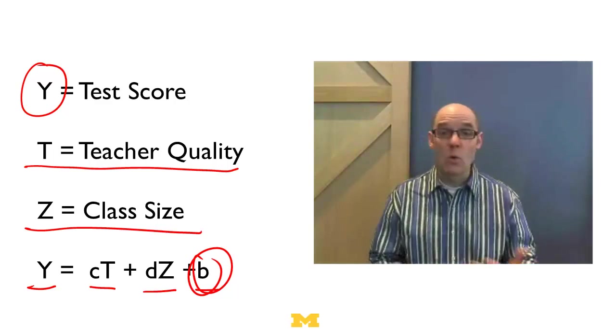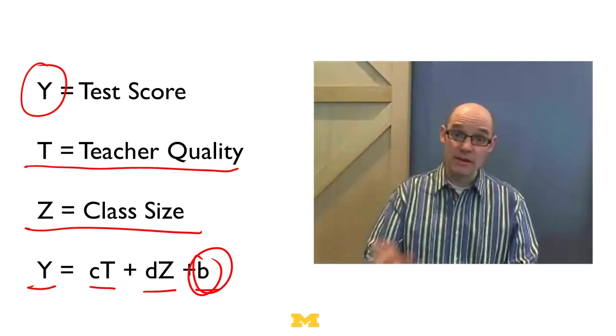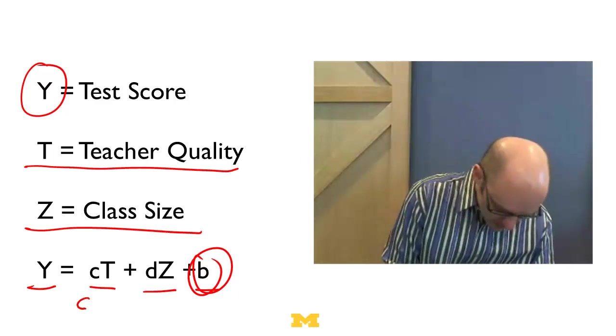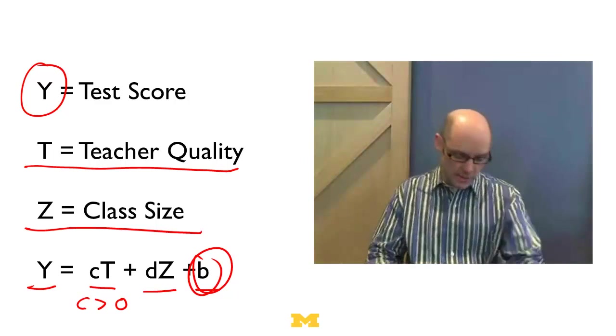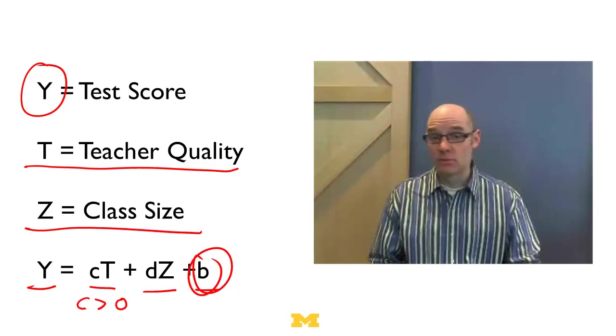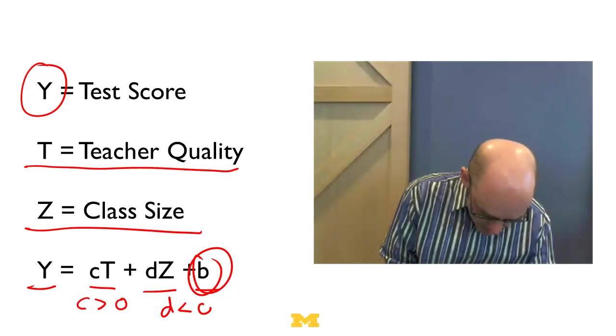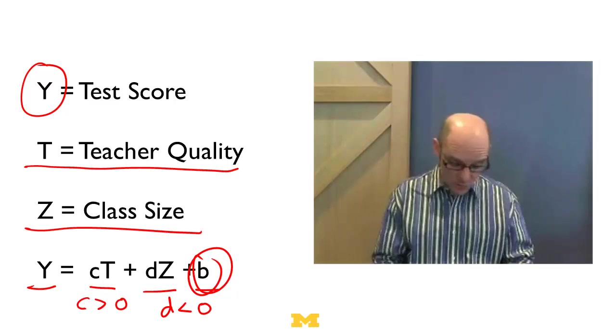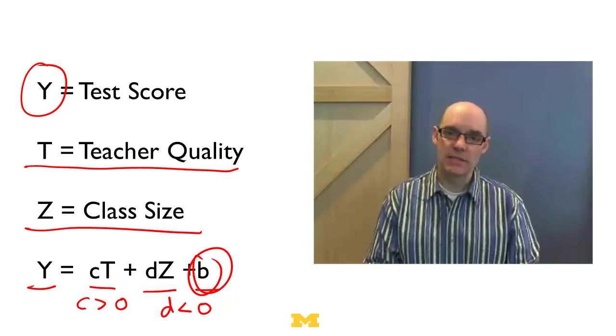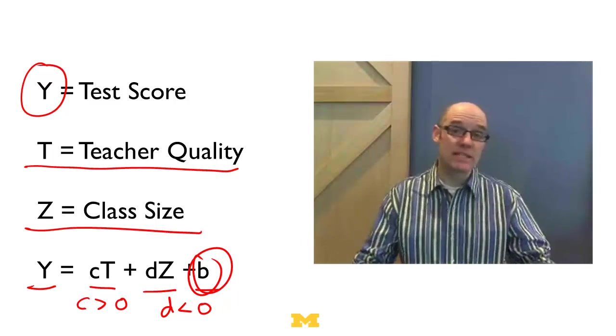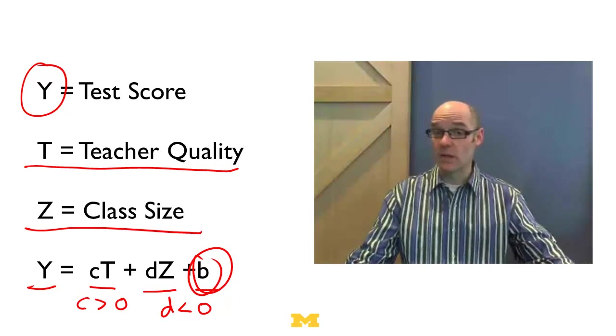Now when we think of this model, what should we expect? Well, what we should expect is that as teacher quality gets better, scores get better, so we should expect c to be bigger than zero. But we should expect as class size gets bigger, that the class performance should fall. So therefore we should expect d to be less than zero. So when you see a model like this, one of the first things you want to do is you want to come at it with some expectations, some preconceived ideas about what you think is going to be true.